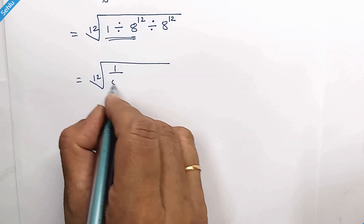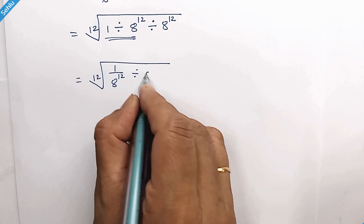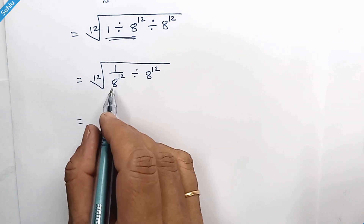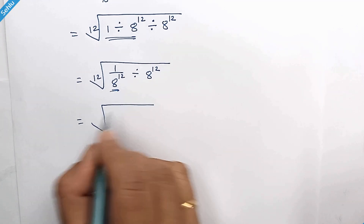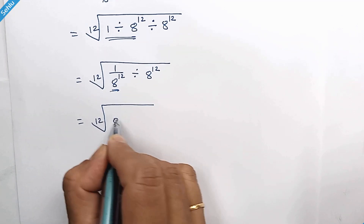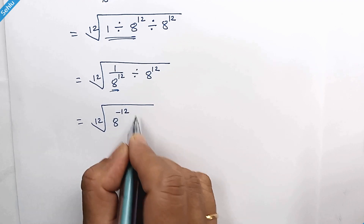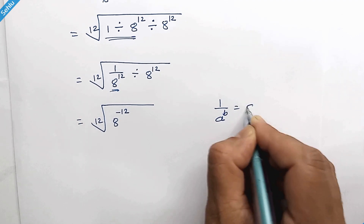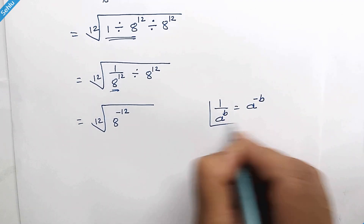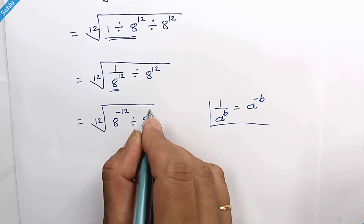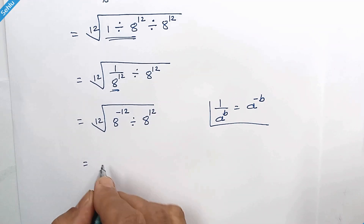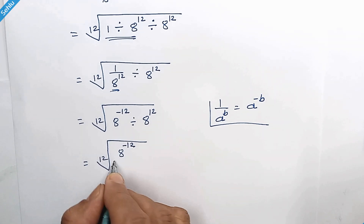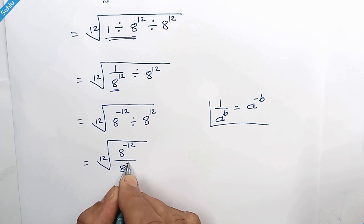We have 1 over 8 to the power 12 divided by 8 to the power 12. Now this can be written as 8 to the power negative 12, because when we have 1 over 8 to the power b, it can be written as 8 to the power negative b. So our next step will be 8 to the power negative 12 over 8 to the power 12.